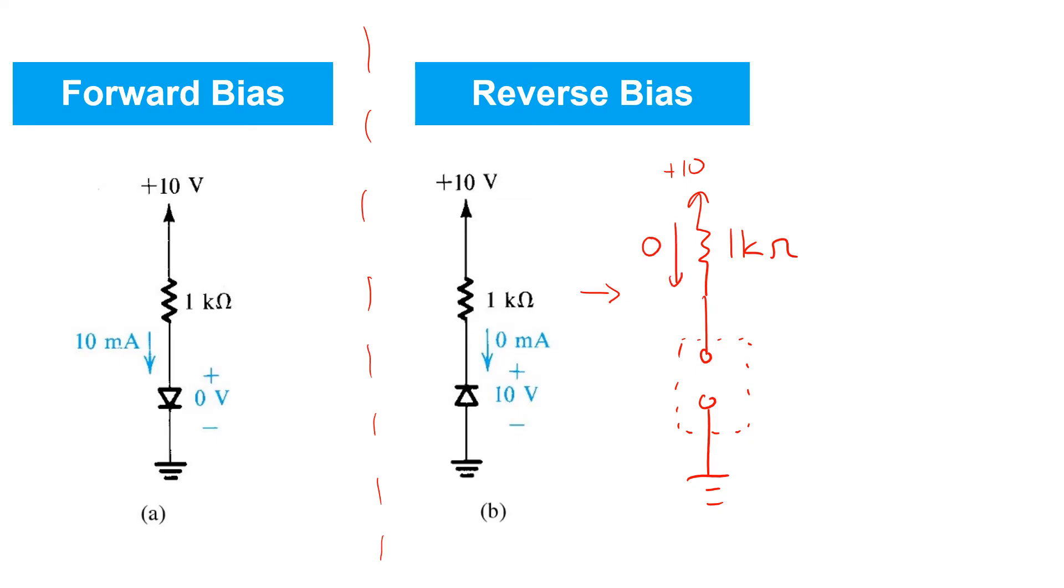Zero voltage drop across the resistor, hence all 10 volts is appearing in the reverse direction now across the diode.